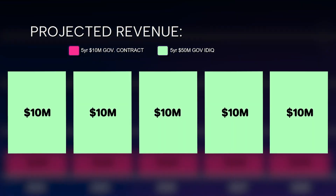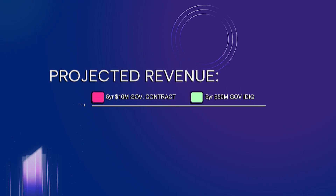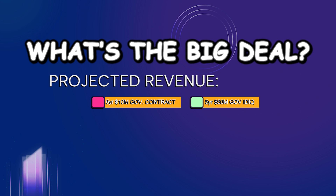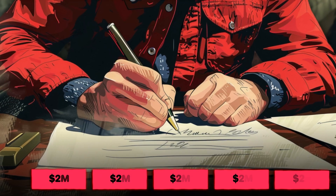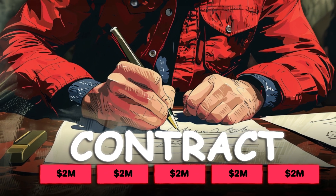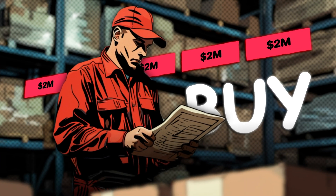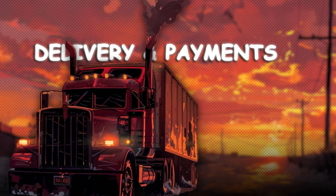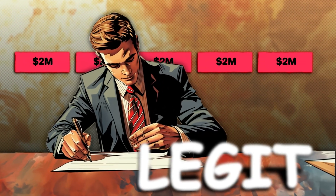In green, we have $10 million a year backed by a $50 million five-year government IDIQ contract. What's the big deal? Well, a lot. The signed contract in red is a contract — the government's agreed to buy $10 million in goods and services and the company's agreed to deliver. The actual delivery and payments will happen in the future, but the contract is signed, so the red revenue is legit.